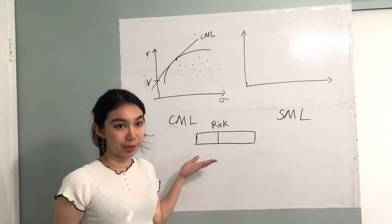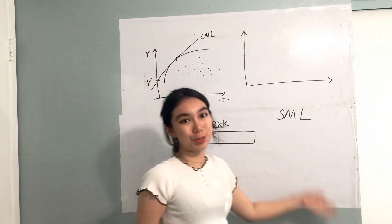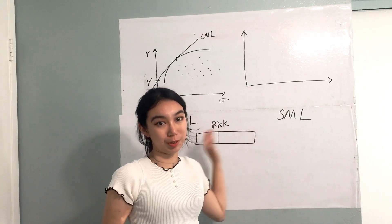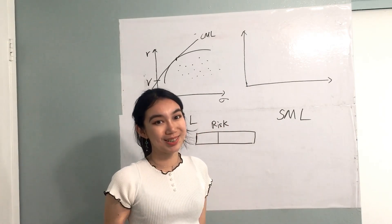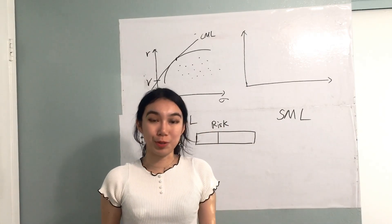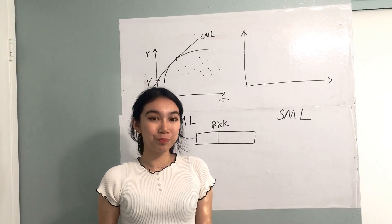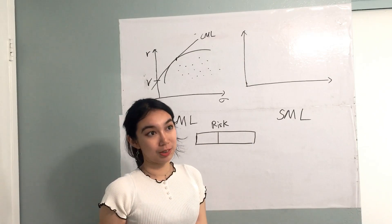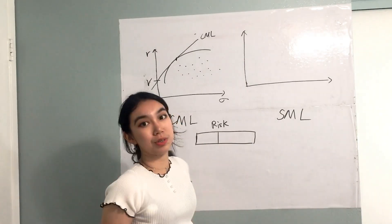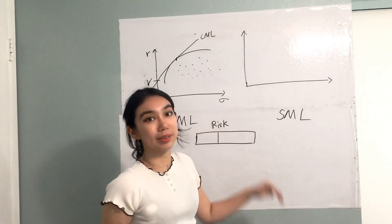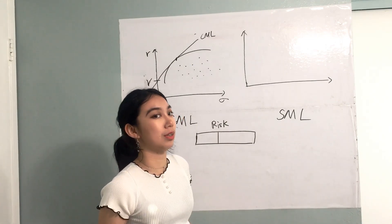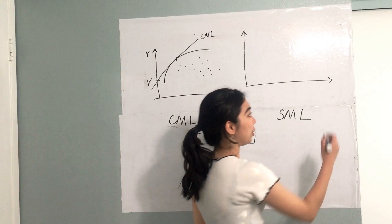Other than the capital market line, we also have the security market line, where people might feel confused about these two concepts. Both of them are talking about the risk return trade-off. The risk measures are different between these two graphs. The capital market line uses the total risk, which is the standard deviation, while the security market line uses the systematic risk, which is the beta.